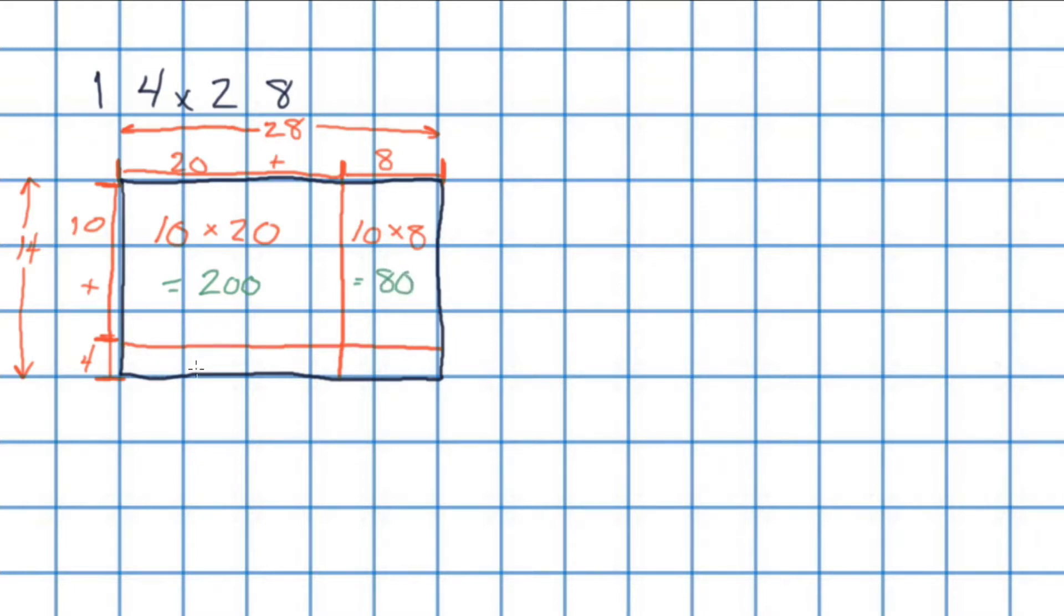Our small, long rectangle down here has a side length of 4 multiplied by the side length of 20. And 4 times 20 is also equal to 80. And finally, our last rectangle has a side length of 4 and a side length of 8. So 4 multiplied by 8. And that is equal to 32.